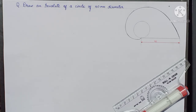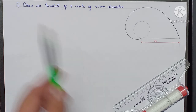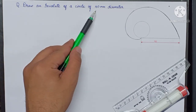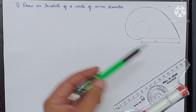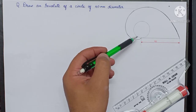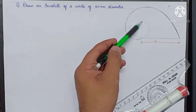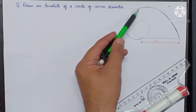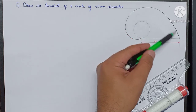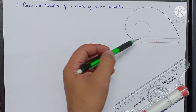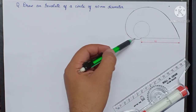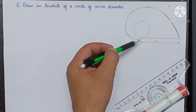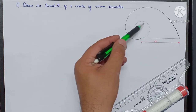Let us take an example: draw an involute of a circle of 40 millimeter diameter. Here, this is a circle and this profile is the profile of an involute — the thread unwound from the circle.